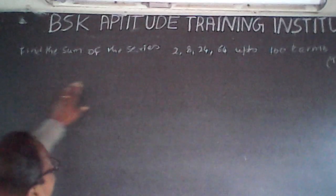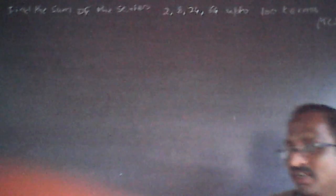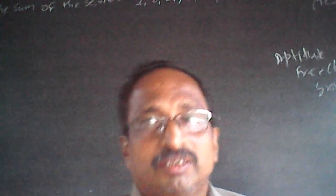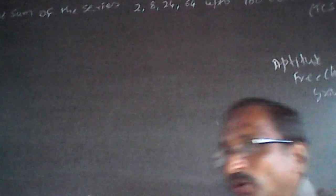The question is: find the sum of the series 2, 8, 24, 64 up to 100 terms. This is a question recently asked in TCS. One of the members in my aptitude free class group on Facebook posted it, and I'm giving a video solution for it. This is a difficult series — you first have to find out how the series works, and then find the sum of 100 terms.